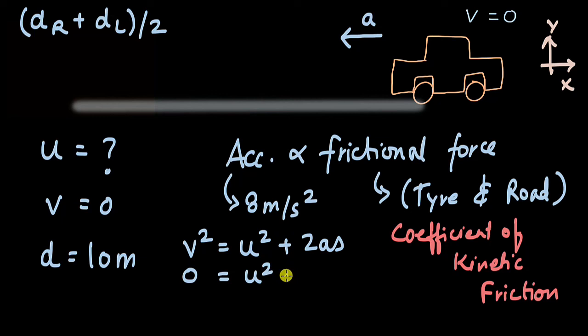So this becomes minus 2 into 8, 16 into 10. This is 160. And when we work this out, u really comes out to be equal to under root of 160. And this comes out to be equal to 12.6 meters per second.